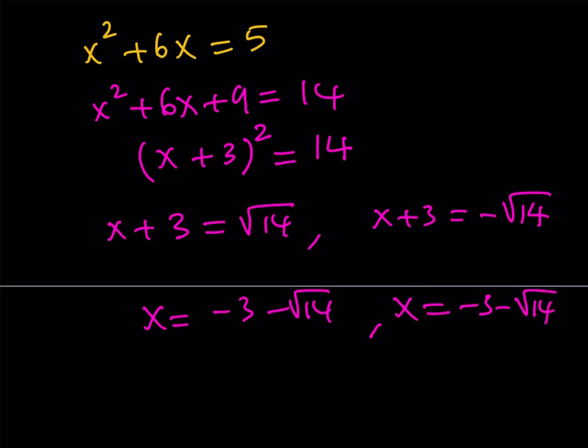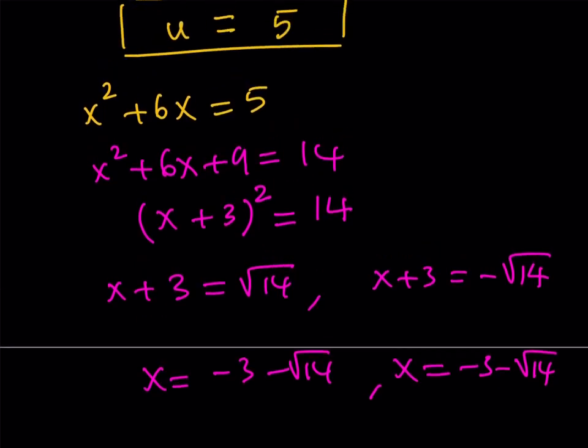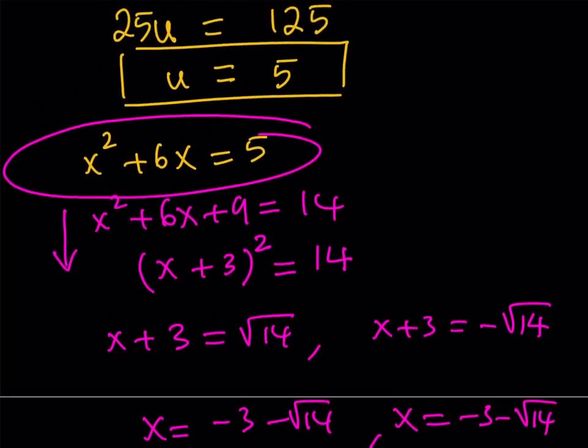Now, here's the trick. You need to check these solutions, but substituting these values into the origin equation is going to be painful. Instead of that, we can actually go ahead, since all these steps are valid and good, we can just go ahead and take that and substitute it. So x squared plus 6x is equal to 5.